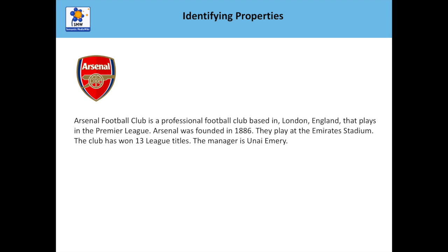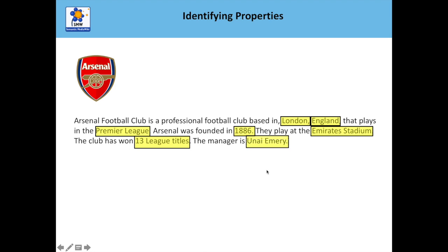I've focused on Arsenal before — there's a bit of writing here which you can imagine on a wiki page. I've taken bits from the actual Wikipedia page and condensed it down. If you read the sentence, you can start to see some properties that can be associated with Arsenal: they're based in London, in the country England, they're in the Premier League, the year they were founded, the stadium they play in, how many league titles they've won, and who their manager is. We want to turn this text to actually grab this information, so you could in future see which Premier League clubs are located in London.